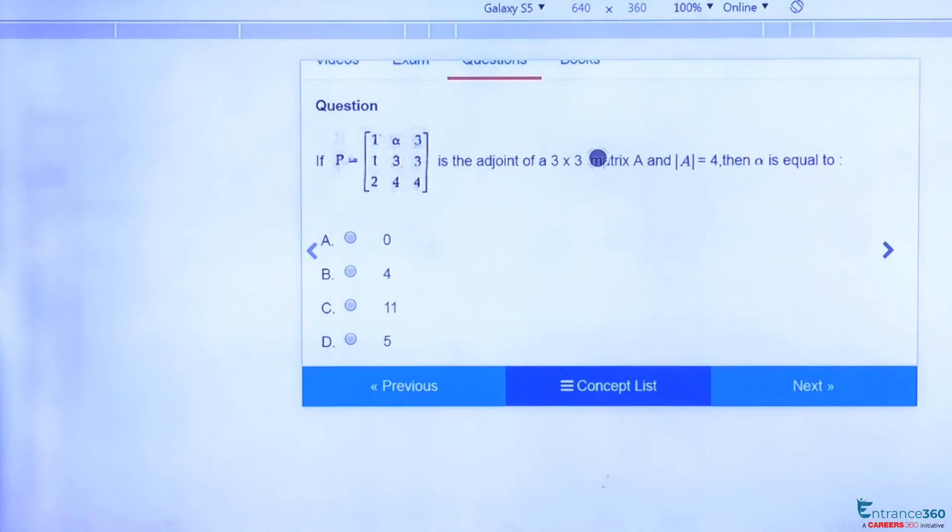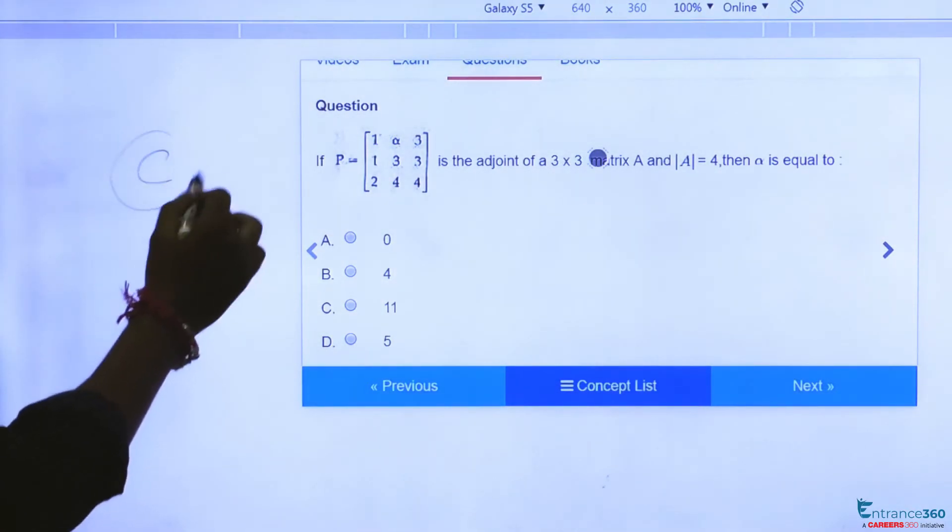So we have got value of alpha as 11. Coming back to our options, hence our option C is correct. Value of alpha is 11.